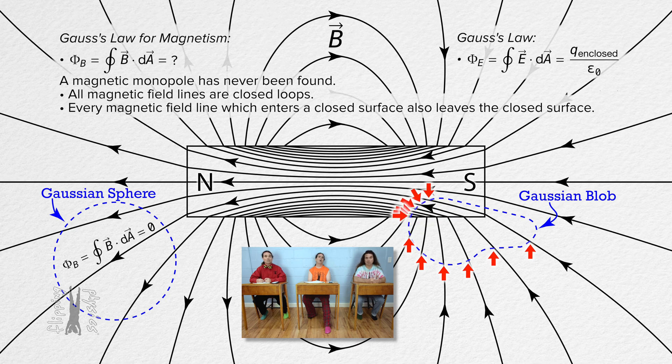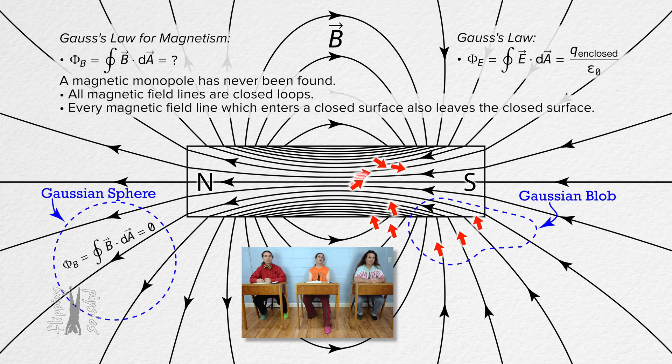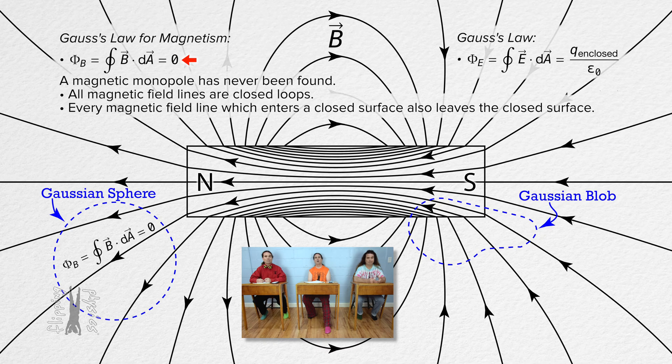So yeah, I would say because magnetic field lines are always closed loops, the magnetic flux through a closed surface always equals zero. Am I right, Mr. P?